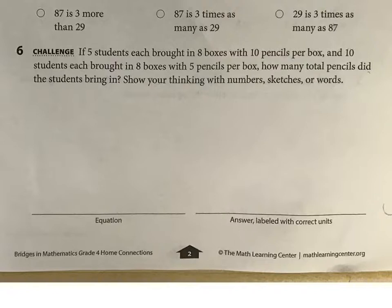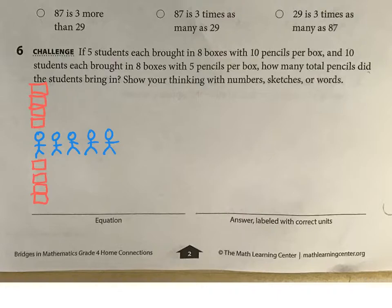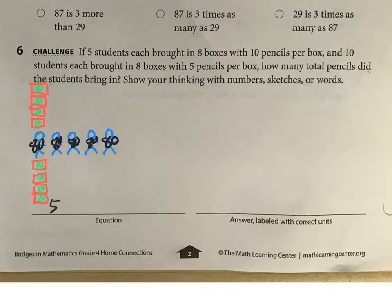Five students each brought in eight boxes with 10 pencils per box. Let me just do one student: one student brought in eight boxes, and each of those boxes had 10 pencils in it. So that's going to be 80 per student — 10 times 8 is 80. Every one of these students has 80 pencils. So we don't need to draw eight boxes for everybody — we know five students and that's 80 pencils per student.